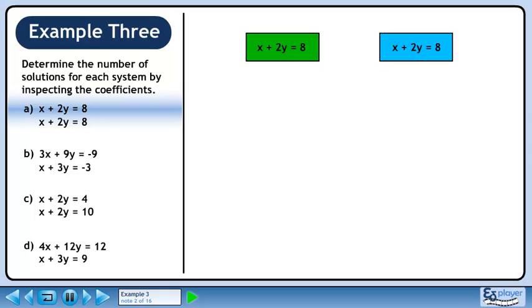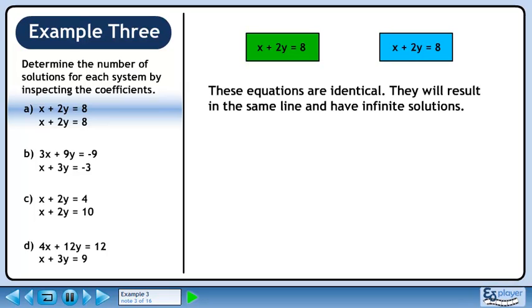In part a, we have x plus 2y equals 8 and x plus 2y equals 8. These equations are identical. They will result in the same line and have infinite solutions.